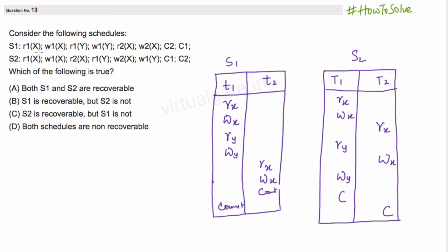Basically this problem is from concurrency control and we have to find out whether these schedules are recoverable or not. We have following options and we have to find out which one is correct.